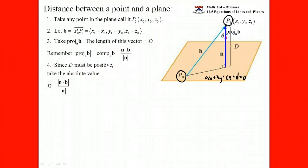A dot product can be negative and we don't want distance to be negative, so the bars in the numerator are absolute value bars, but the bars in the denominator are magnitude bars. Just remember: if there's a number inside, it's absolute value; if there's a vector inside, it's magnitude. This is going to drive our formula.